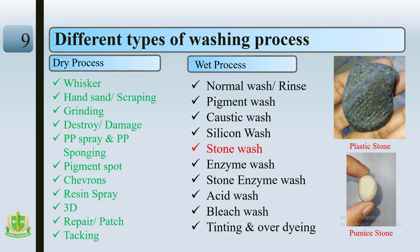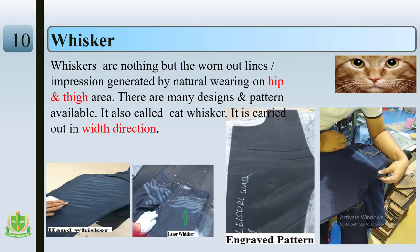For dry process, methods include whisker, hand sanding, destroy, PP spray, and pigment. For wet process, we may use normal wash (rinse), pigment wash, plastic wash, silicon wash, stone wash, and more. Nowadays plastic stones are available, since pumice stone is natural and rare.